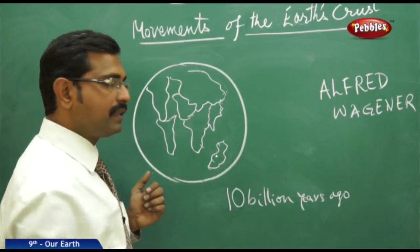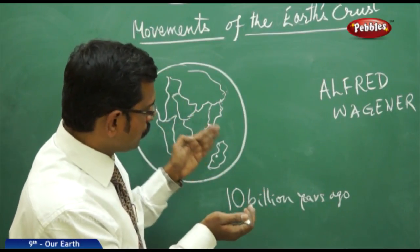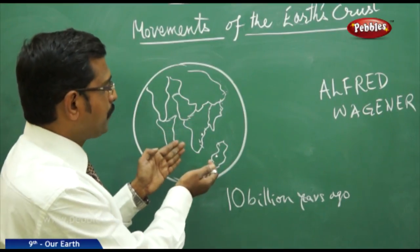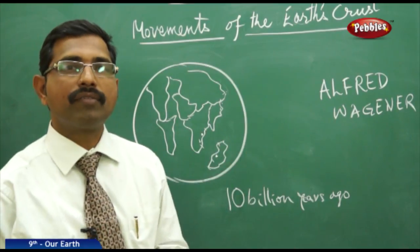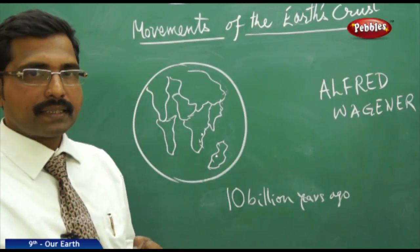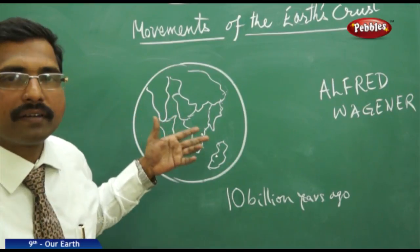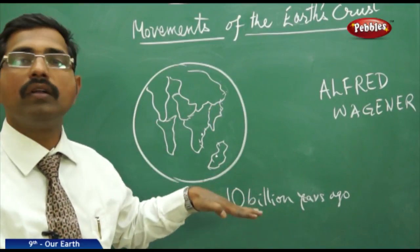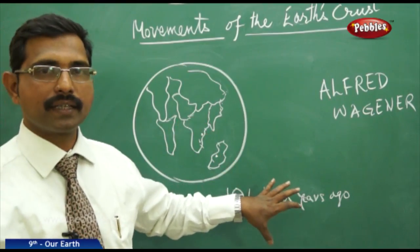Evidence for continental drift includes the fact that plant species found in one area are similar to plant species found in the African coastal part. This explains that these events happened billions of years ago. The collision, movement, and merging of continents caused the Tethys Sea to disappear, mountains like the Himalayas to rise, valleys to form, and huge basins to become what we now call oceans. These are how all oceans and continents formed around 10 billion years ago.